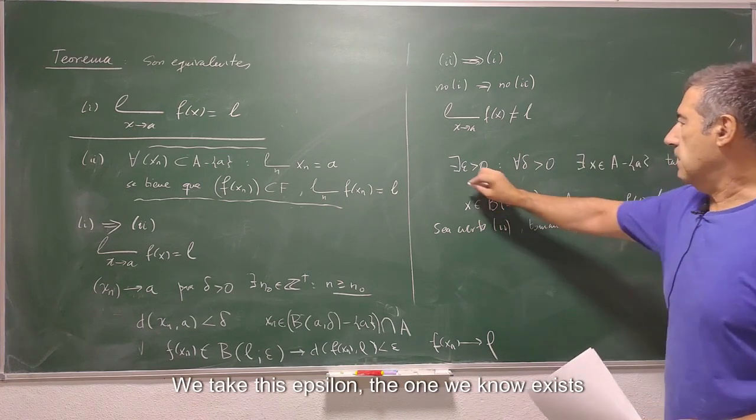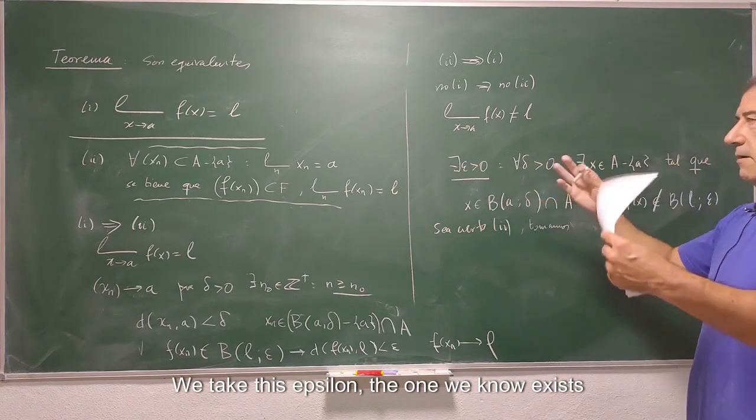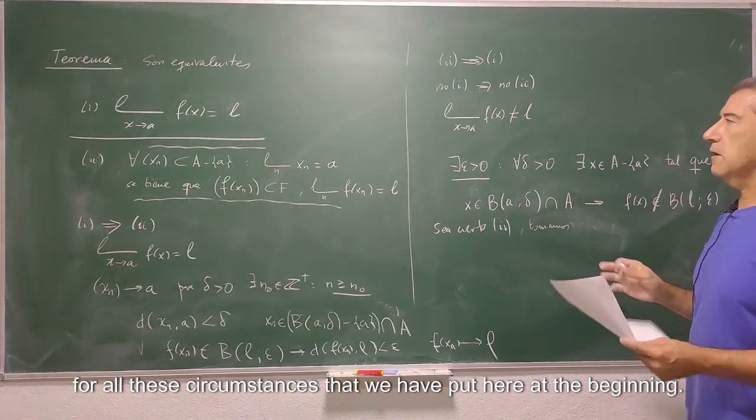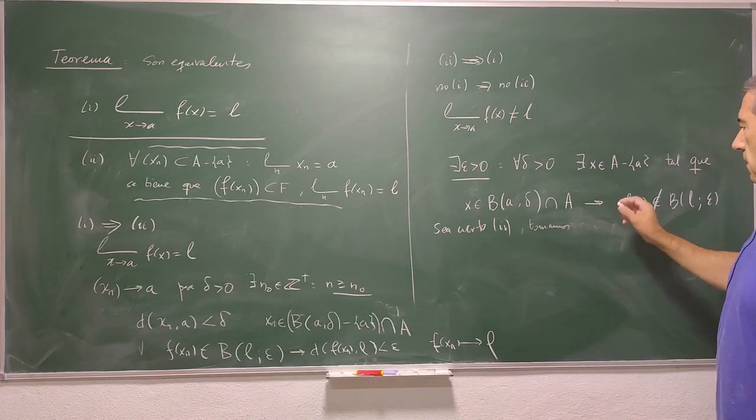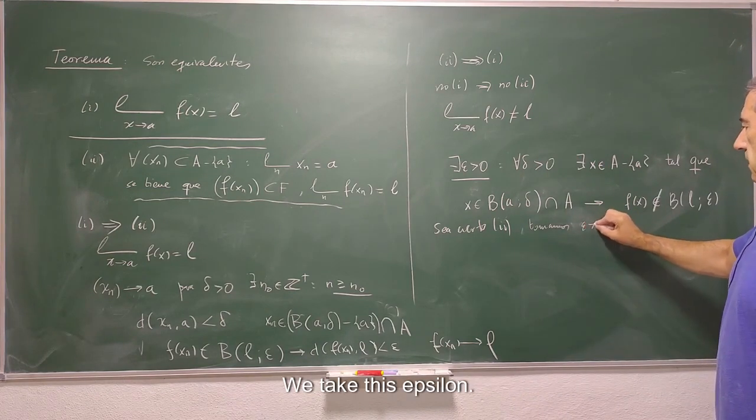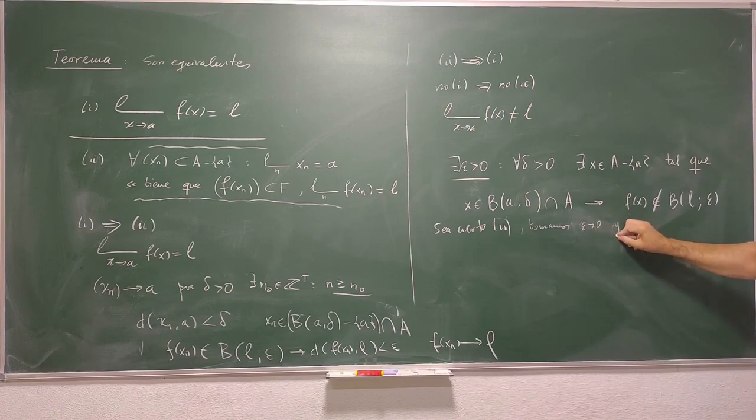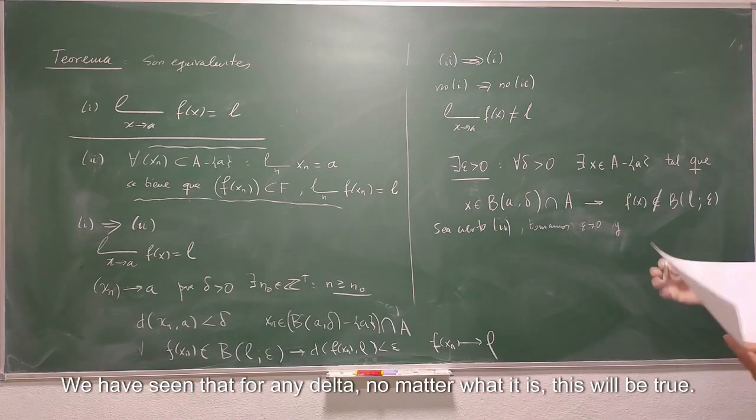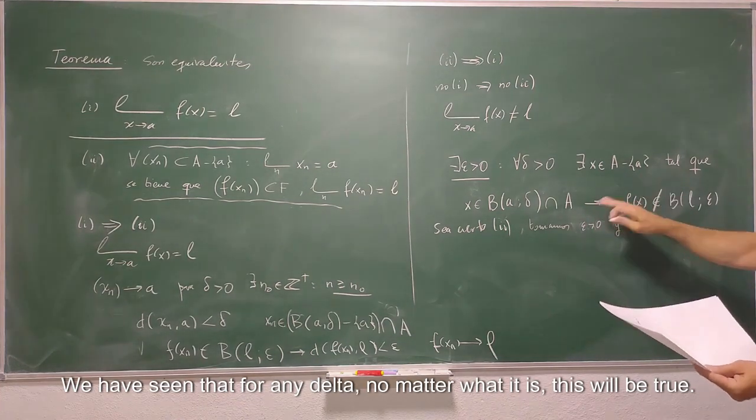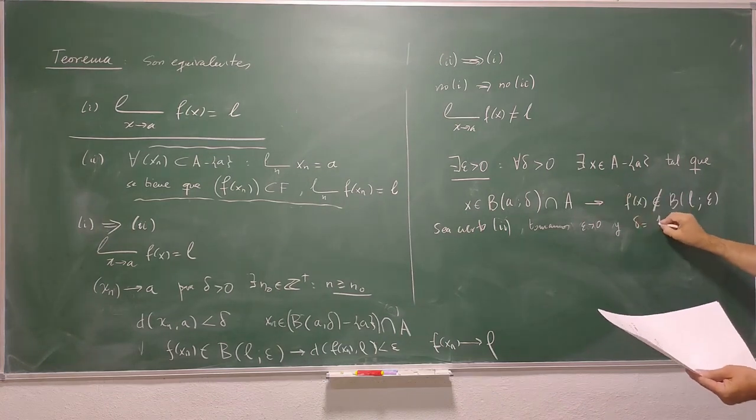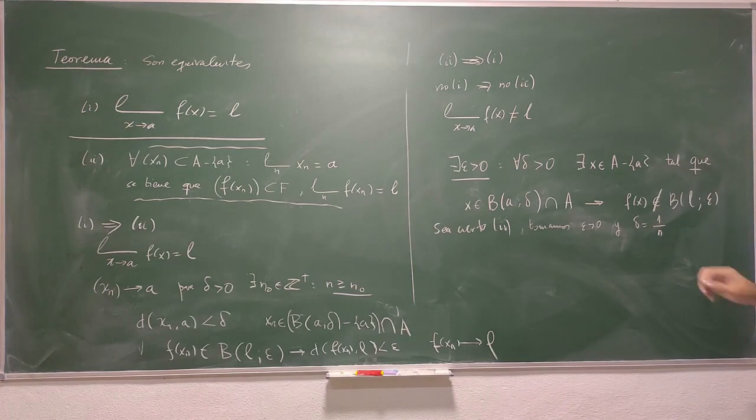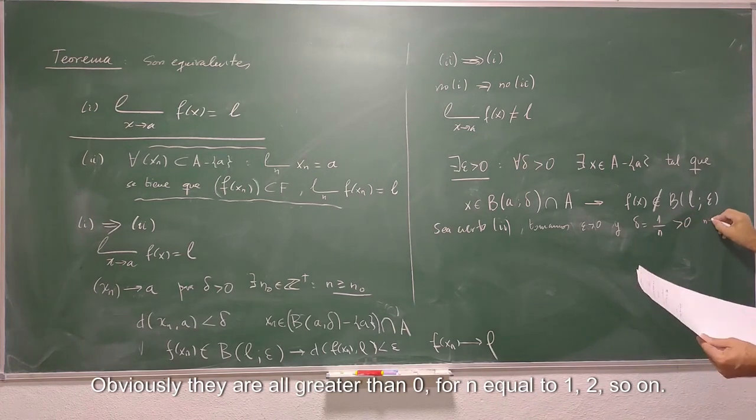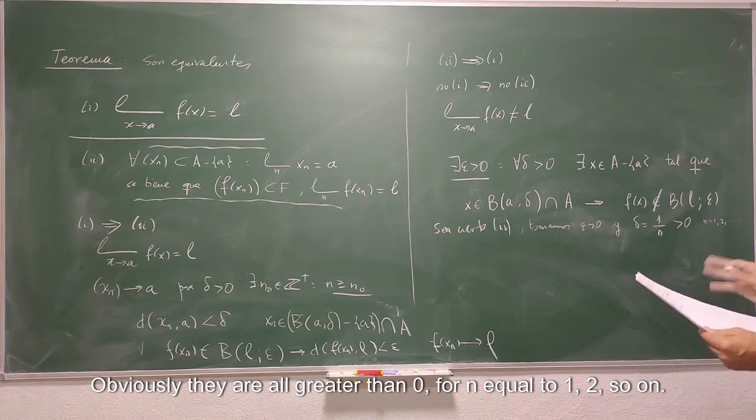We take this epsilon, the one we know exists, for all these circumstances that we have put here at the beginning. We have seen that for any delta, no matter what it is, this will be true. So let's do these deltas, one match n. Obviously, they are all greater than zero, for n equal to 1, 2, so on.